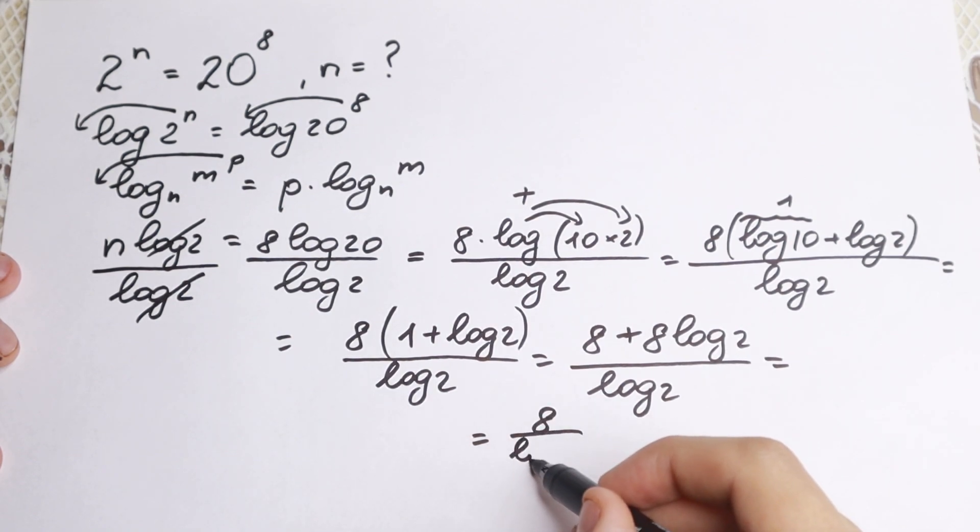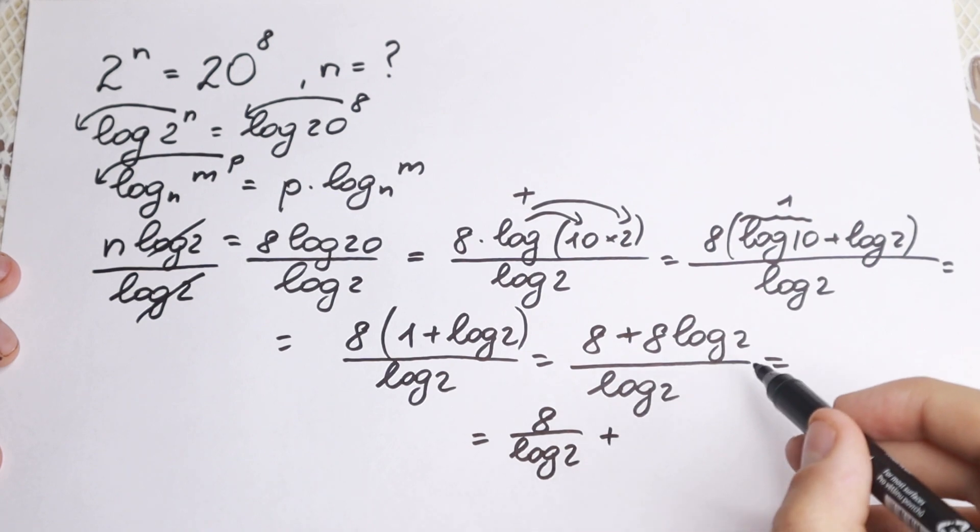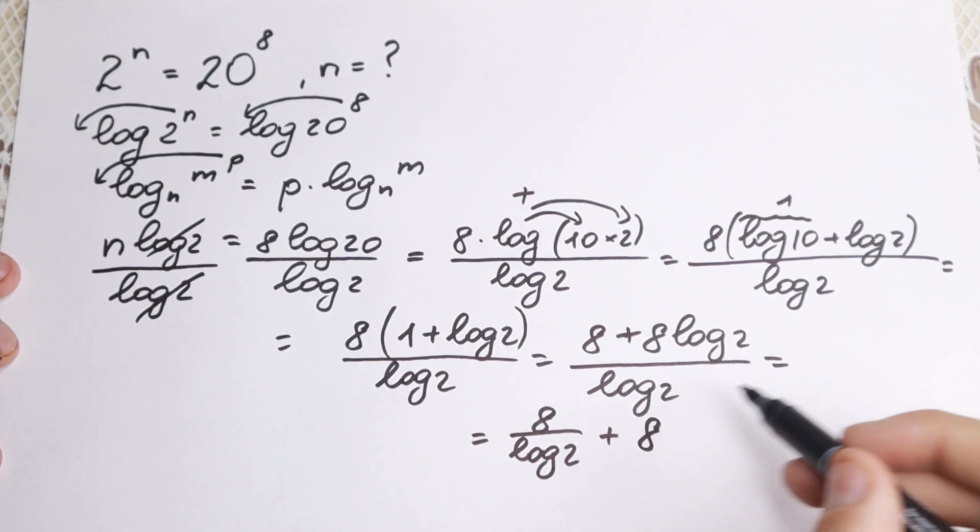We will have 8 over logarithm 2 and plus, right here only 8 because this is cancelled. Plus 8.